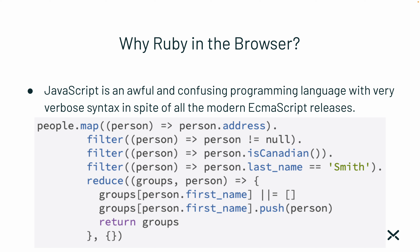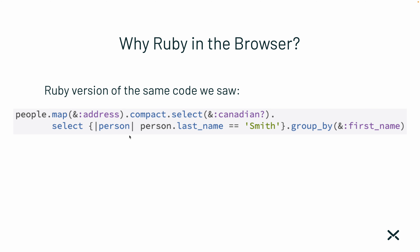JavaScript in general is an awful and confusing programming language with very verbose syntax, in spite of all the modern ECMAScript releases. Even today I have to write code like this for multi-step processing of data — going from people to people grouped by first names with filters in between. Ruby is just a lot shorter. I can write less code to do the same thing because Ruby gives you compact iterators like map with ampersand, select with ampersand, and a group_by method. Ruby is still a lot nicer than JavaScript.